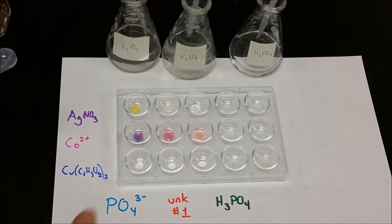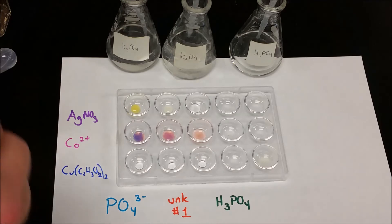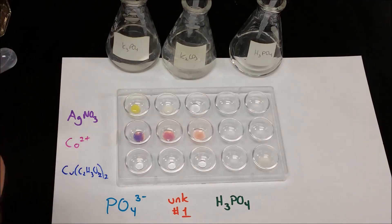You can use these first two tests to distinguish whether or not you have a phosphate or something else. But if you think you might have phosphoric acid, you have to do all of the other tests first and then come back at the very end and check it by adding copper(II) acetate.